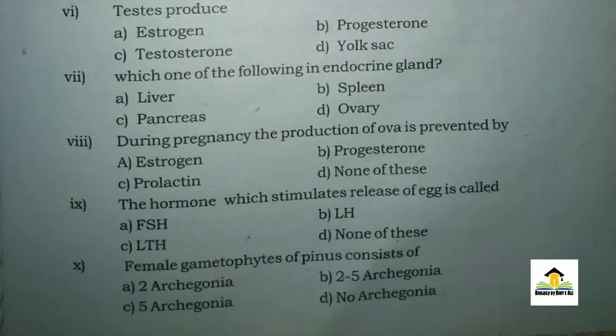MCQ number six: Testis produces — A: estrogen, B: progesterone, C: testosterone, D: none. The right answer for this MCQ is C: testosterone. MCQ number seven: Which one of the following is an endocrine gland — A: liver, B: spleen, C: pancreas, D: ovary. The right answer is D: ovary.